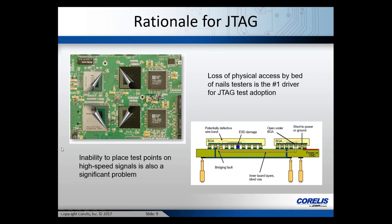The primary driver for JTAG is the loss of physical access on circuit boards. Traditional test equipment like scopes, analyzers, and in-circuit testers rely on physical probes connected to test points. However, as boards have gotten smaller, denser, and faster, placing test points has become a major issue. IC packages like BGAs make it much harder to externally access device pins. Additionally, as operating frequencies have reached the megahertz and gigahertz ranges, test points can no longer even be placed on those signals.